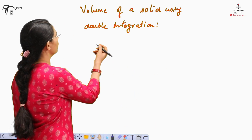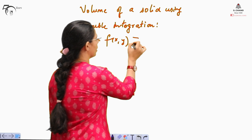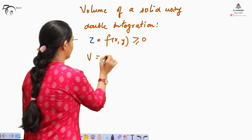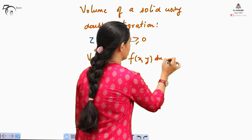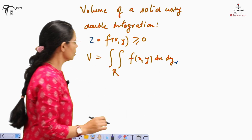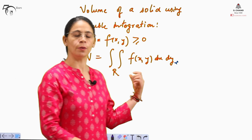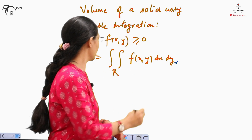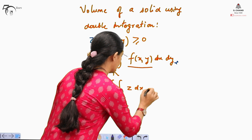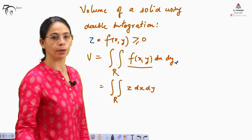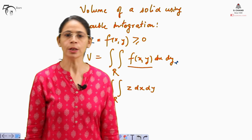For a function f(x, y), if we need to find out the volume, z is written as f(x, y), which is greater than 0. Then the volume will be written as the double integral over region R of f(x, y) dx dy. This will give us the volume of f over the region R. We can understand it as: volume equals the double integral of z dx dy over region R for the function f(x, y).